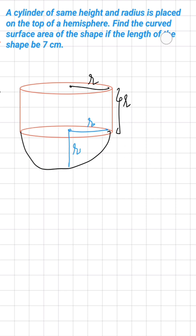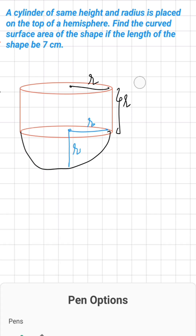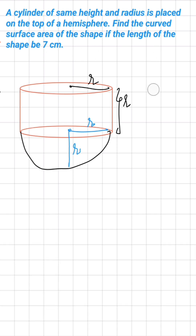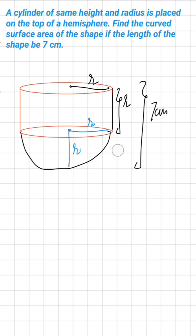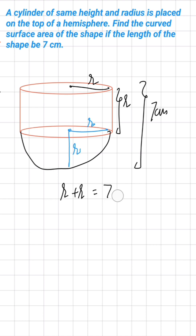We have to find the curved surface area of the shape if the length of the shape is 7 centimeters. This whole length — R plus R — equals 7 centimeters. So R + R = 7, which means 2R = 7.